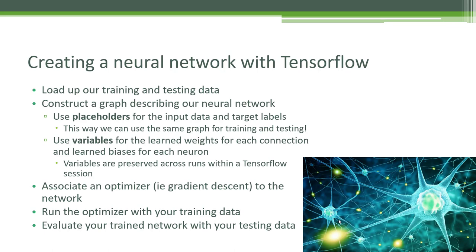Finally, we'll evaluate the results of our trained network using our test dataset. At a high level: we create a network topology, feed it training data, use gradient descent to converge on optimal weights between each neuron, and then evaluate performance using a test dataset the network has never seen before — checking if it can correctly classify data it was not trained on.